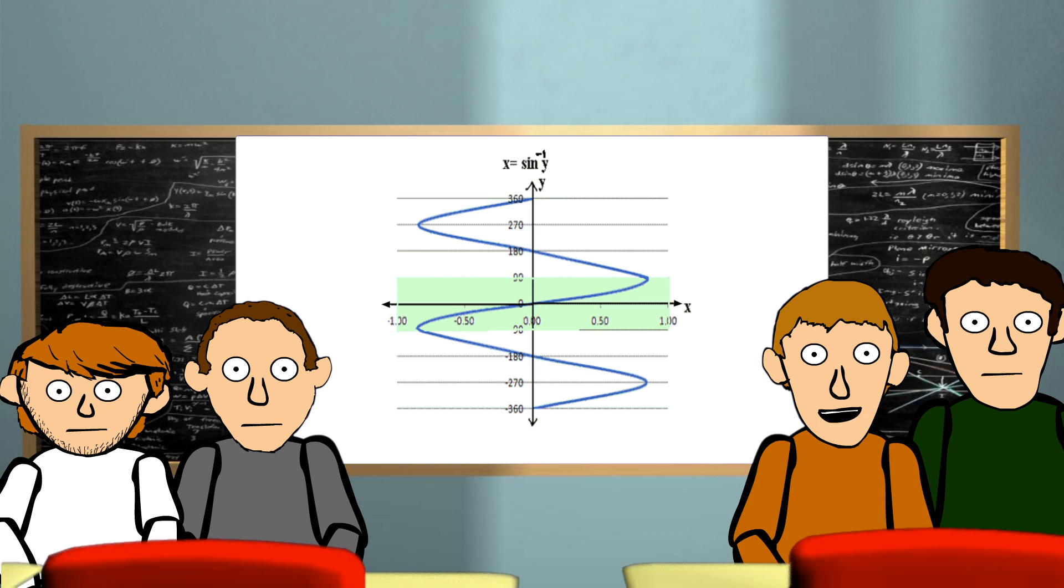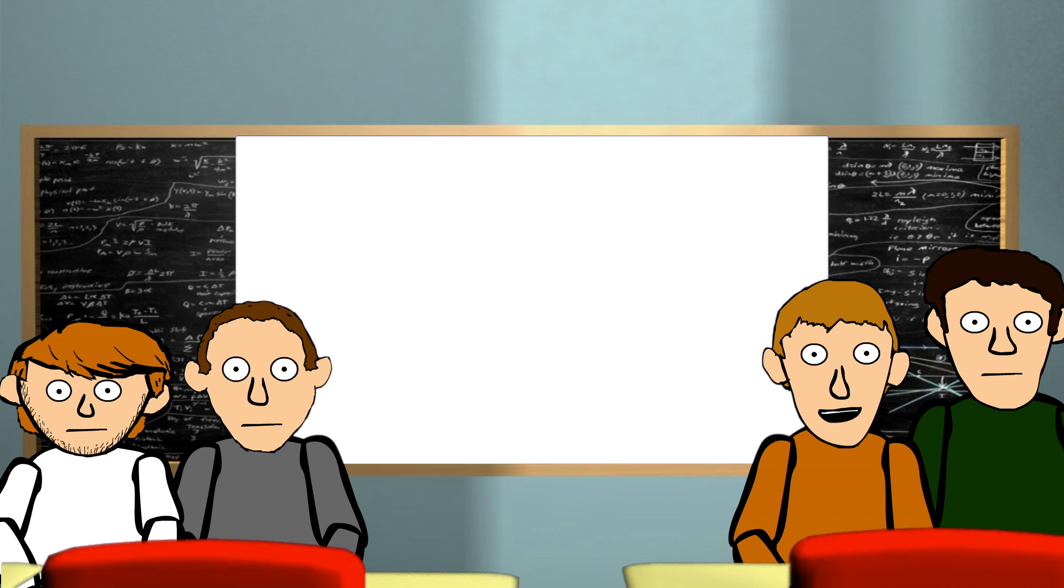The inverse of the sine wave is not a function. No, no, don't worry. All we have to do is restrict the domain to negative pi over 2, pi over 2. This domain restriction makes the inverse a function. As you can see here, the sine wave repeats over and over. The portion of the wave between negative pi over 2, pi over 2, has no two points with the same x-coordinate, which is what makes it, and its inverse, a function.